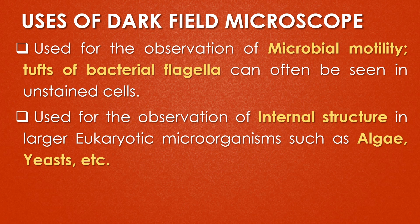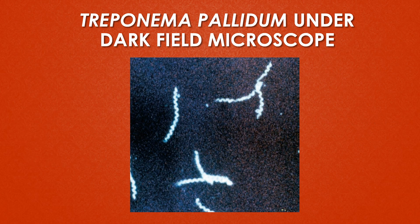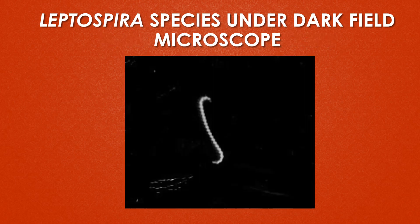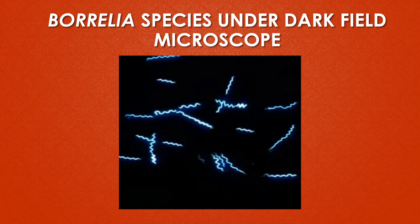It is also used for the observation of internal structures in eukaryotes like algae and yeast. This image shows Treponema pallidum under the dark field microscope. This image shows Leptospira species under the dark field microscope, and this image shows Borrelia species under the dark field microscope.